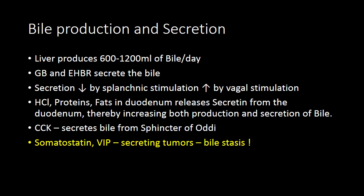There is a stark difference between bile production and bile secretion. Bile production is the function of the liver, which produces almost half a liter to 1200 ml of bile per day. Whereas bile secretion is the function of the gallbladder and the extrahepatic biliary tree. Vagal stimulation increases the secretion of bile, whereas stimulation of the splanchnic nerves results in decreased secretion. When the duodenum has hydrochloric acid, proteins or fats, there is stimulation to release secretin from the duodenum, increasing both the production and secretion of bile.